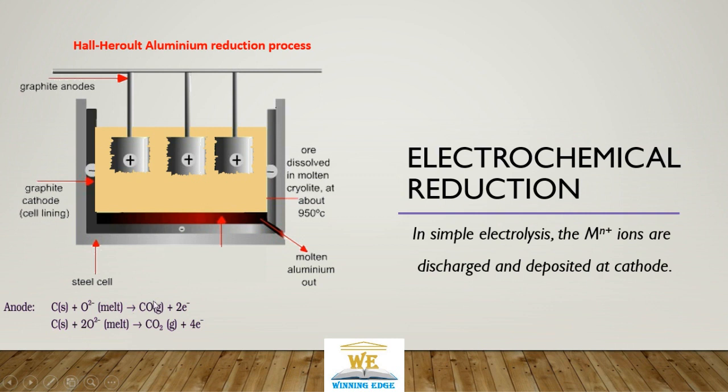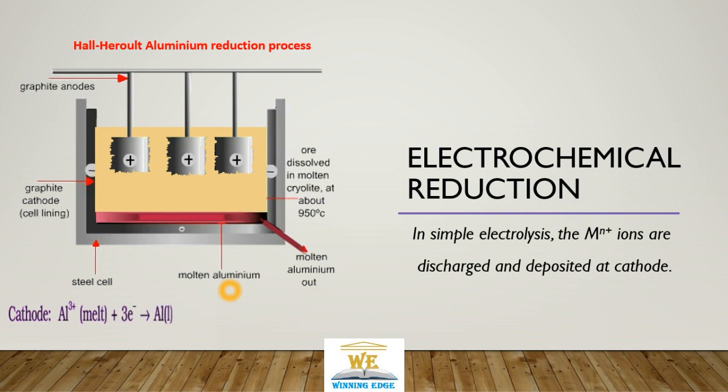carbon combines with the oxides of alumina. It melts. Oxide combines to form carbon monoxide. Carbon monoxide further gets oxidized to carbon dioxide. The electrons move toward the graphite cathode. At the cathode, aluminum gets reduced to give us aluminum metal, which is molten and gets collected out.